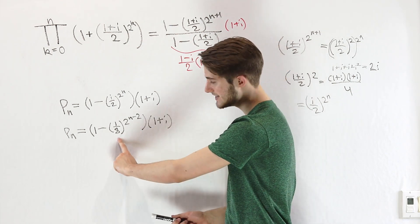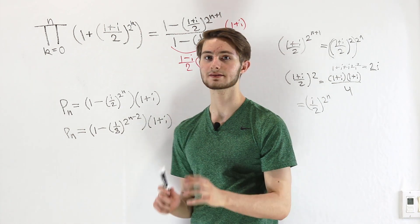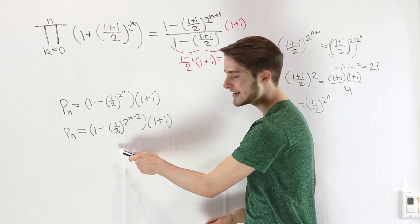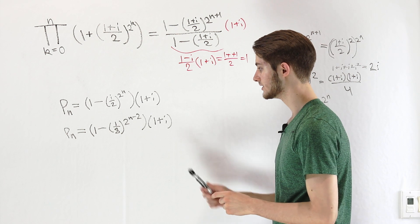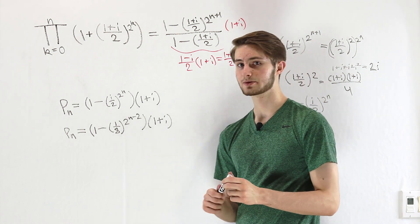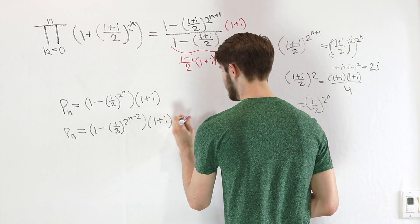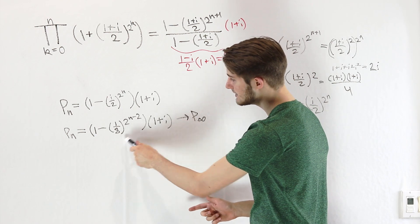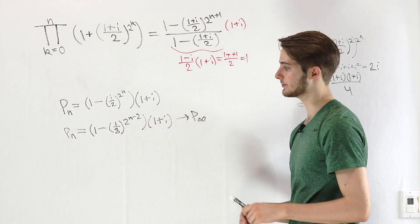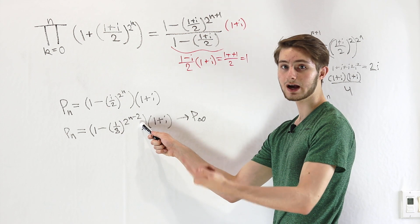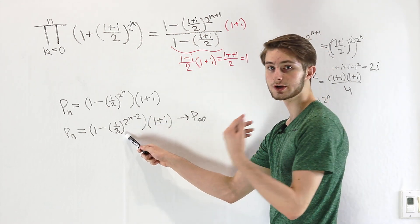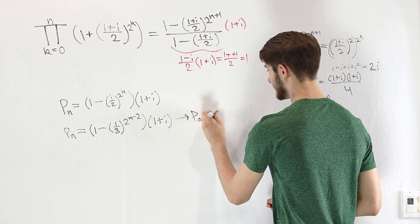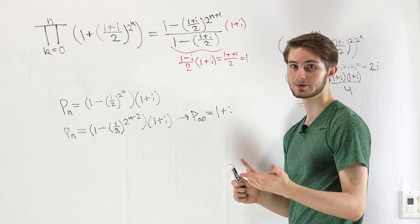that will leave us on the inside with just positive 1/8, a nice real number. So this is (1 - (1/8)^(2^(n-2)))(1 + i). That's our finite product. Then if we want the infinite product, we take the limit as n approaches infinity. 1/8 is clearly less than 1, so as we raise it to higher and higher powers, this term goes to 0. So all we're left with is 1 × (1 + i), and that is our solution for the infinite product.